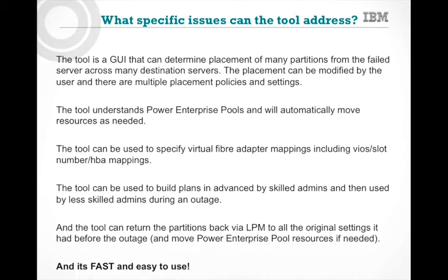So what specific issues can the tool address? The tool has a GUI — you log in and it can determine the placement of all partitions from the failed server across many destination servers. Placement can be modified by the user and there are multiple placement policies. The tool understands your Power Enterprise Pools and will move things automatically. The tool can specify your virtual fiber channel adapter mappings for SSR. You can build plans in advance and use these pre-built plans when you have an outage, allowing a less-skilled person to import them. And after SSR moves things away, the tool knows how to bring things back to the original server using Live Partition Mobility, restoring all original settings including Power Enterprise Pool resources.